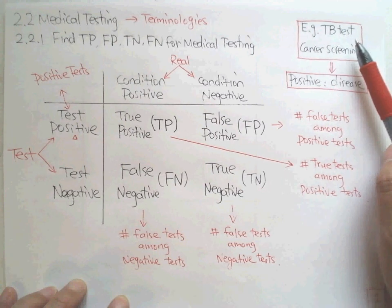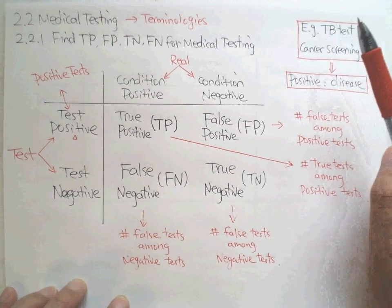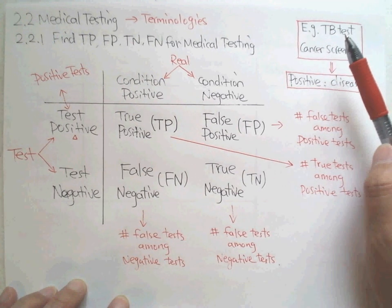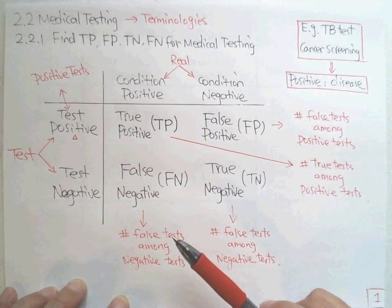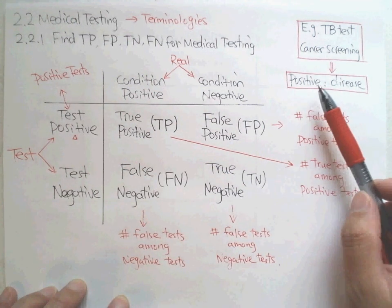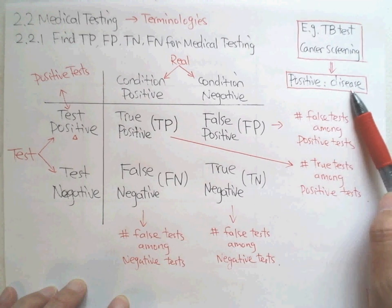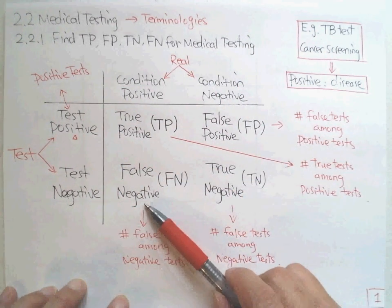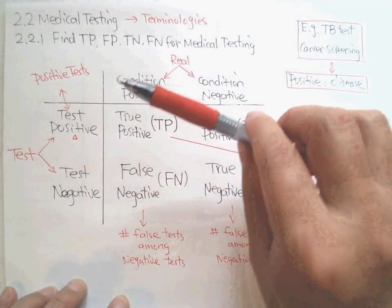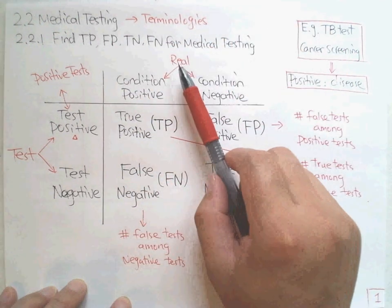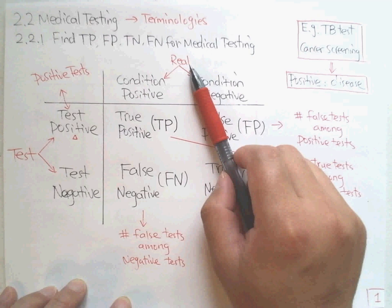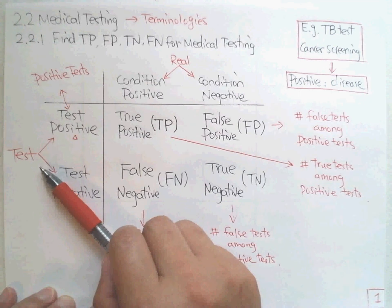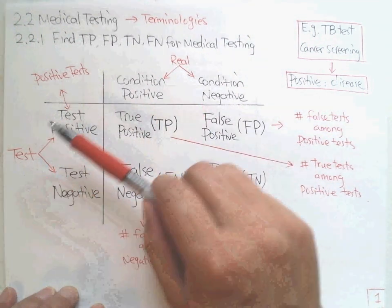How good is medical testing? Or how do we define how good a medical test is? That is the major topic. Medical testing positive means disease; negative means no disease. Now we look at the contingency table for a medical test. We have two cases to look at. The column represents the real case — the real situation — and the row represents the result from the test.